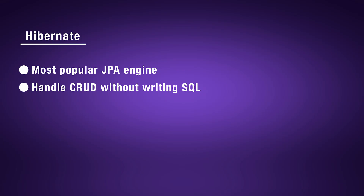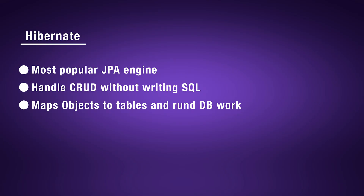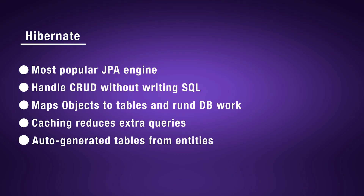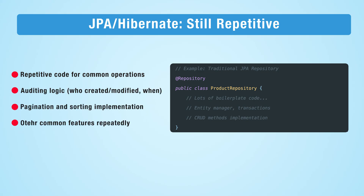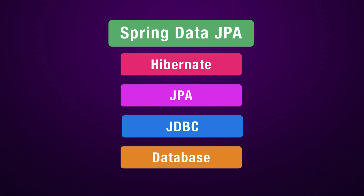With Hibernate, you no longer have to write SQL for common operations like inserting, updating, and querying data. Hibernate takes care of generating the necessary SQL statements for you. It also extends JPA with powerful features like reducing database queries by caching frequently accessed data, and it can generate database tables based on your Java entity classes. While JPA and Hibernate are great, you still need to write a lot of repetitive code for common operations like auditing, pagination, and other features. To make database access even simpler, the Spring team introduced Spring Data JPA.